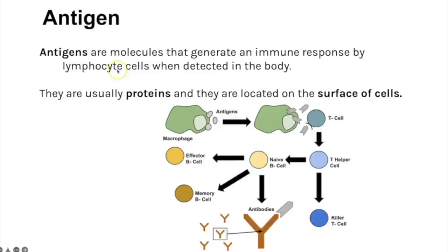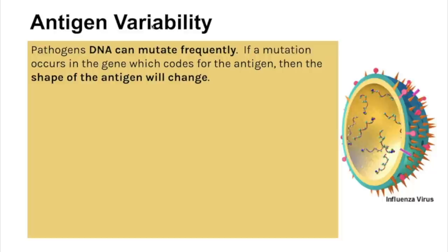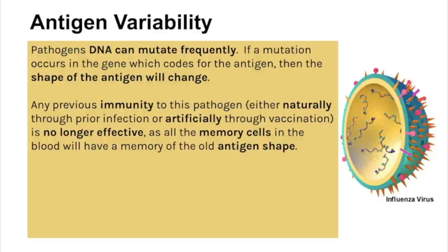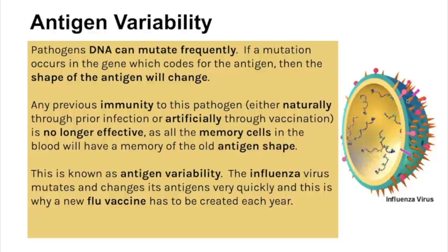Antigen variability is the concept that pathogens' DNA can mutate frequently. If a mutation occurs in the gene coding for an antigen, the shape of the antigen on the surface of the virus, fungus or bacterium changes. Any previous immunity is then lost because memory cells in the blood remember the old antigen shape, not the new one. The influenza virus mutates and changes its antigens very quickly, which is why a new flu vaccine is created every year to account for that change.